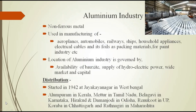First of all let us discuss about aluminum industry. From bauxite ore we prepare aluminum, so it is a non-ferrous metal. Aluminum is a wonder metal — it is very cheap, non-corrosive, and lightweight. It is used from household utensils to artificial satellites. It is especially used in aeroplanes and automobiles, railways, ships, household appliances, electrical cables, foils as packing materials, and in the paint industry. Because of its wide usage it is called a wonder metal.